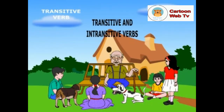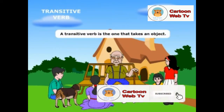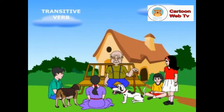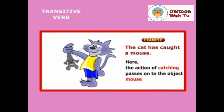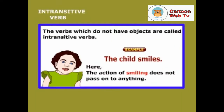What are transitive and intransitive verbs? A transitive verb is the one that takes an object. Example: the cat has caught a mouse. Here, the action of catching passes on to the object 'mouse'. The verbs which do not have objects are called intransitive verbs. Example: the child smiles. Here, the action of smiling does not pass on to anything.